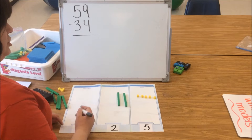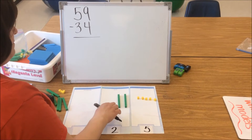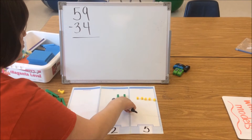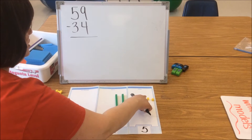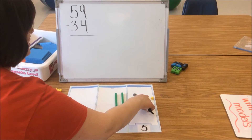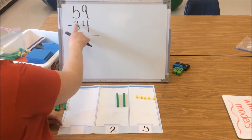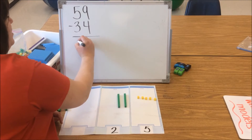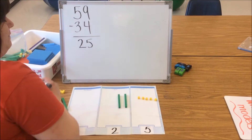Again, let's count to make sure that we've modeled the correct number: 10, 20, 21, 22, 23, 24, 25. So 59 minus 34 is 25.